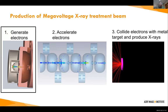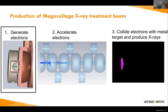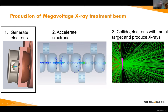With our physics montage out of the way, we're now ready to start explaining what's happening in these pictures. The process of electron acceleration to produce x-rays can be split into three stages: first we generate some electrons, second we accelerate those electrons, and finally we collide them with a metal target to produce x-rays.